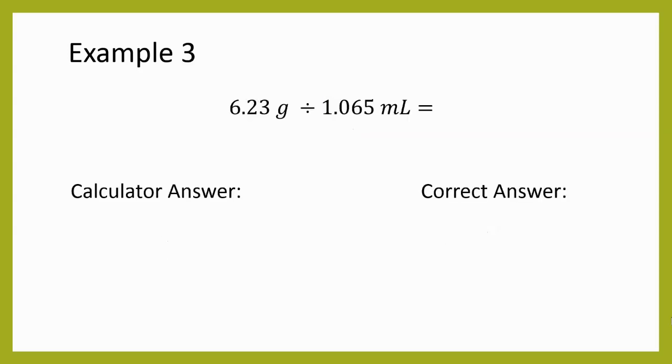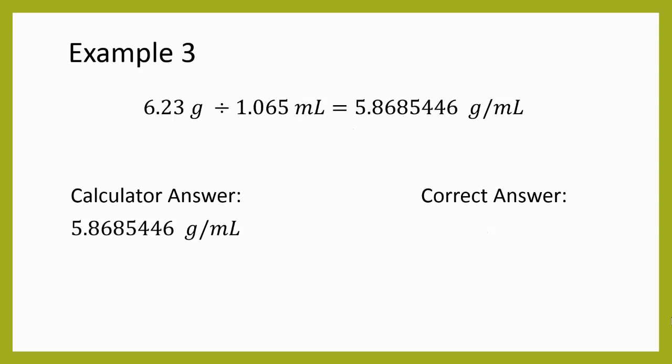So now we're getting to the multiplication and division. And this is what we're going to use most commonly in chemistry. So we go ahead, we plug this into our calculator, and we get a big long stream of numbers. So 5.8685446, and then don't forget units, so in this case, grams per mole. Now if we look at this, the 6.23 has three sig figs, and the 1.065 has four sig figs. The smaller number of sig figs is three. So I'm going to take my calculator answer and round it to three sig figs. So 5.86, and I'm chopping off an eight, which is a big number, it's bigger than five. So I need to round up in this case. So 5.87 grams per mole is my answer.